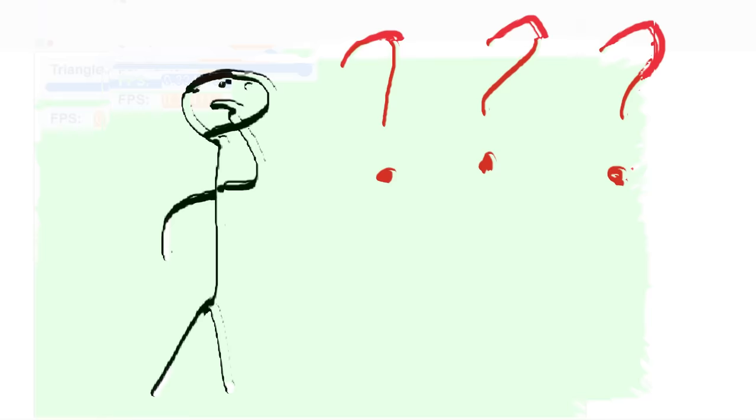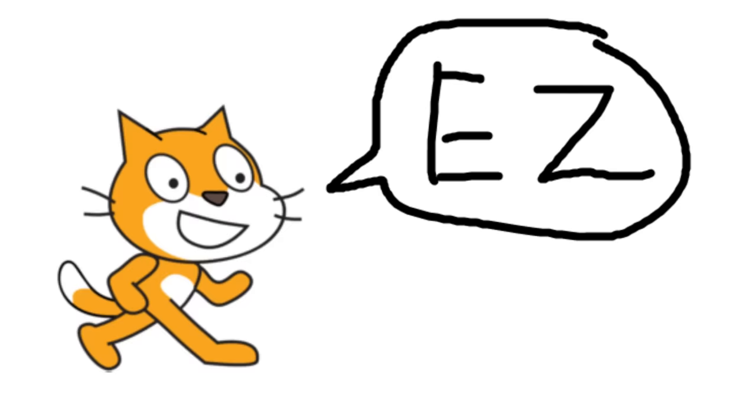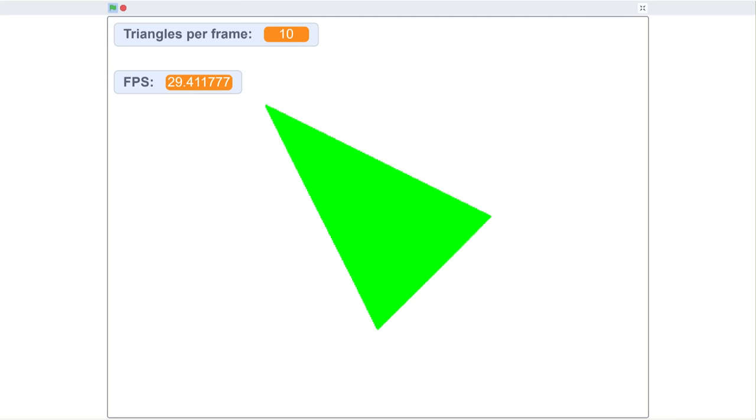But why is it running so slowly? Scratch can do calculations very quickly, so it must be moving the pen that's slowing it down.